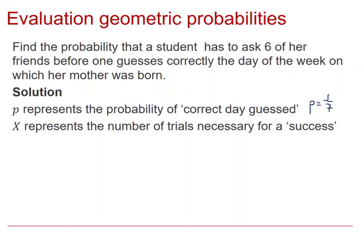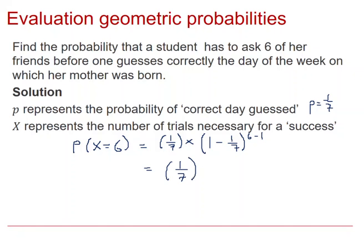X, the random variable, represents the number of trials necessary for a success — for that day to be guessed correctly. In this instance, we wish to find the probability that x equals six. Using the probability formula, we get P multiplied by (1 minus P) to the power of six minus one, which gives us one seventh multiplied by six sevenths to the power of five. That's quite an awkward fraction, so it's more appropriate to give the solution as a decimal correct to three significant figures: 0.0661.